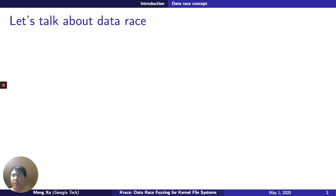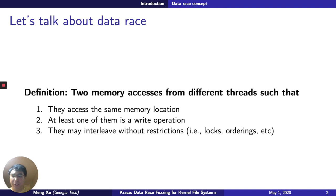Since this work is about data races, let's talk about what it is and why we need a specialized fuzzer to find them. The definition of a data race is actually super simple. It's basically defined as two memory accesses from different threads, such that the two accesses go to the same memory location, at least one of them is a write, and they may interleave without any restrictions, like without locking or without ordering.